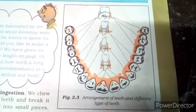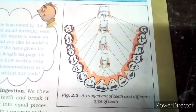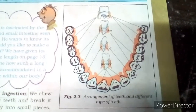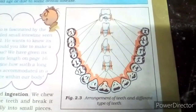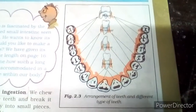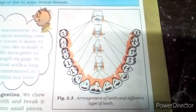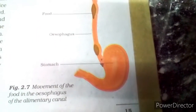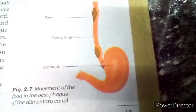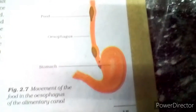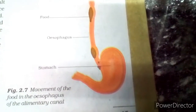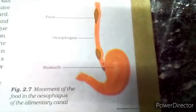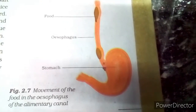The second set that replaces them are the permanent teeth. The permanent teeth may last throughout life or fall off during old age or due to some dental diseases. The food moves through the esophagus of the alimentary canal, and you can see the food pipe going to the stomach in this diagram of the alimentary canal.